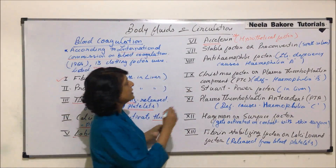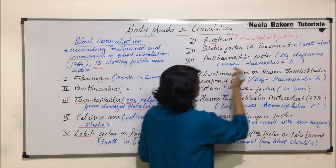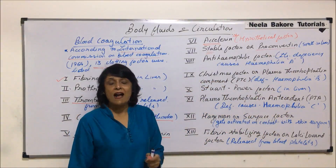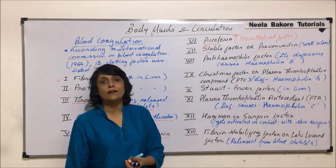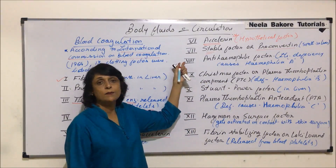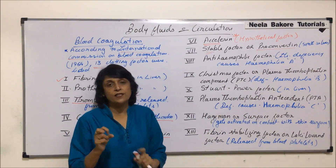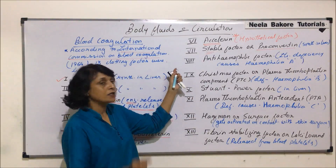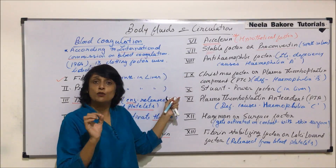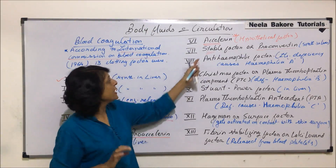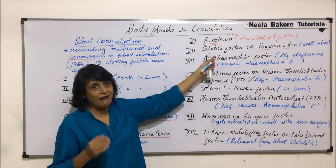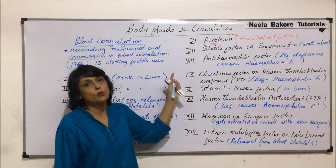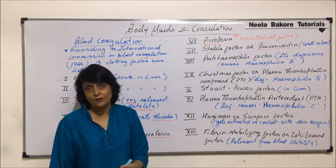The seventh factor is known as stable factor, also known as proconvertin. Questions are often asked using the names of these factors or by their numbers, so we need to know both. For example, they can ask which number is the stable factor, or which factor is number seven.